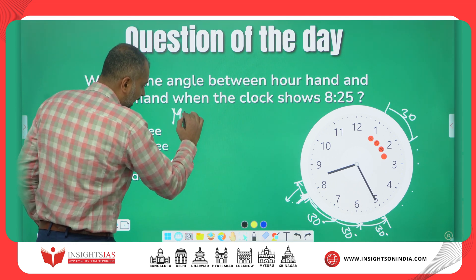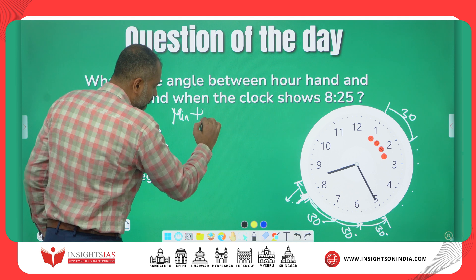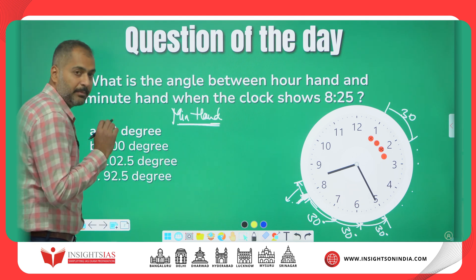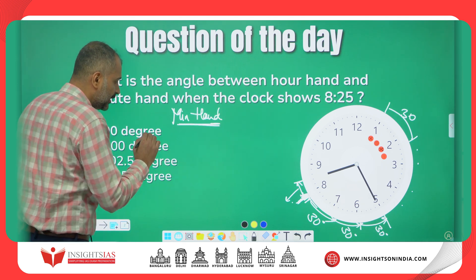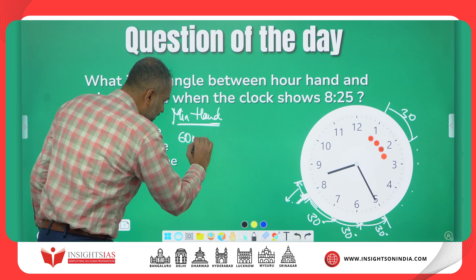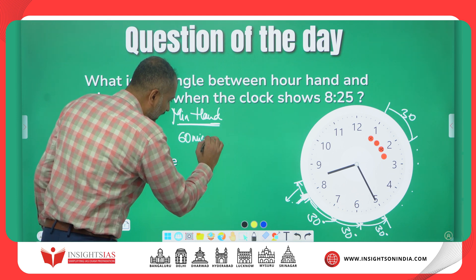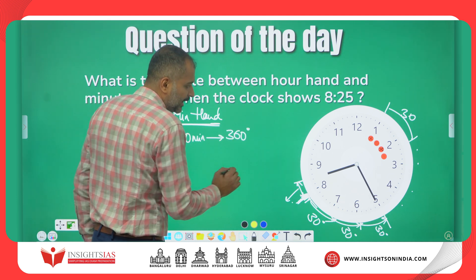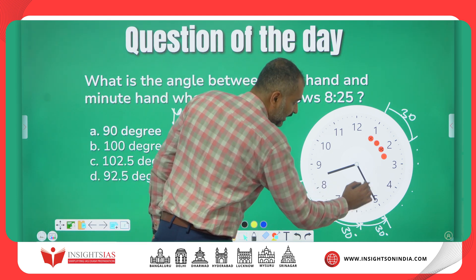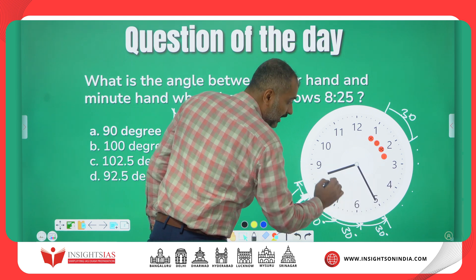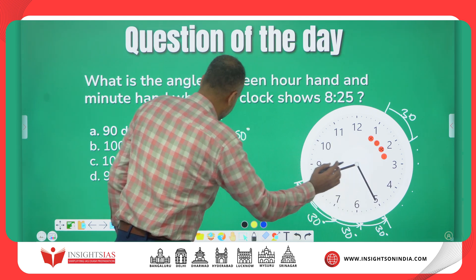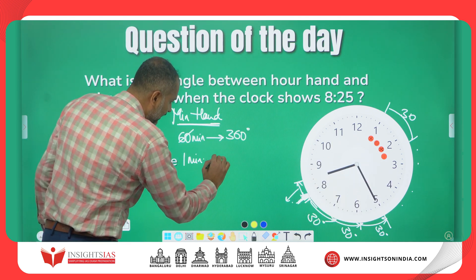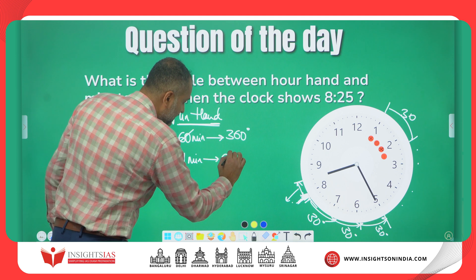The minute hand in 60 minutes — that is 1 hour — completes 360 degrees. In 60 minutes it completes one full revolution, so in every 1 minute it covers 6 degrees.